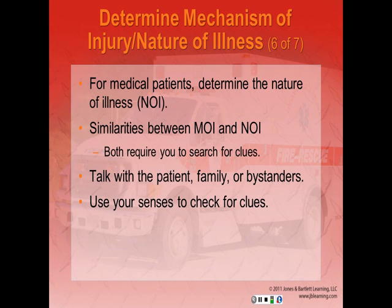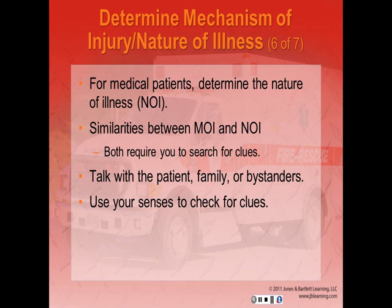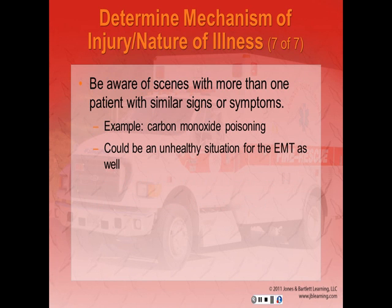With blunt trauma, force occurs over a broad area and the skin is usually not broken; however, tissues and organs below the area of impact may be damaged. With penetrating trauma, force occurs at a small point of contact — it is an open wound with high potential for infection. For medical patients, instead of mechanism of injury, we look at the nature of their illness. Both MOI and NOI require you to be an investigator, researching clues about how the incident happened. Talk with your patient, family, or bystanders and use your senses to check the scene for clues.